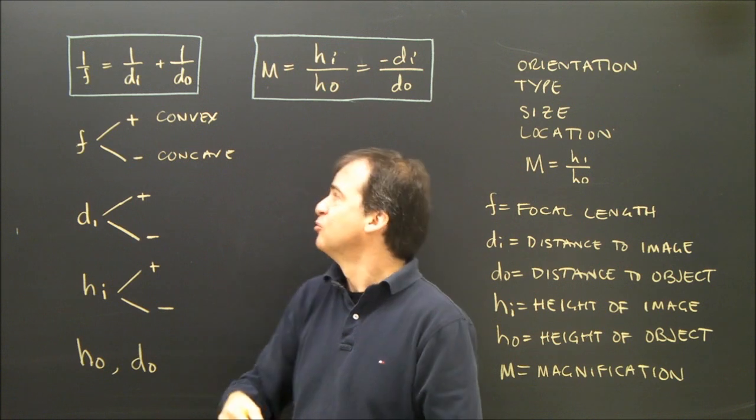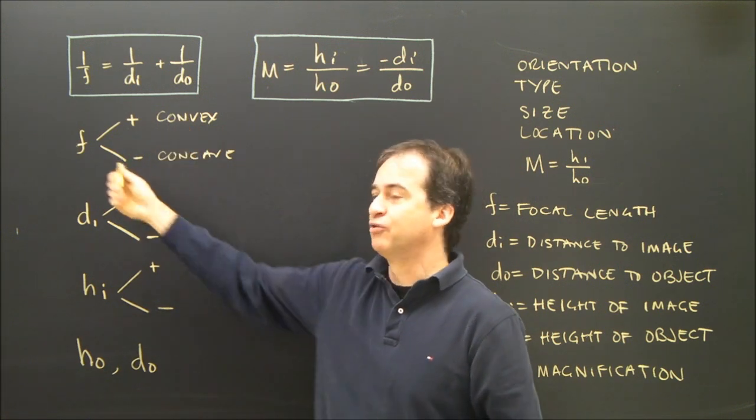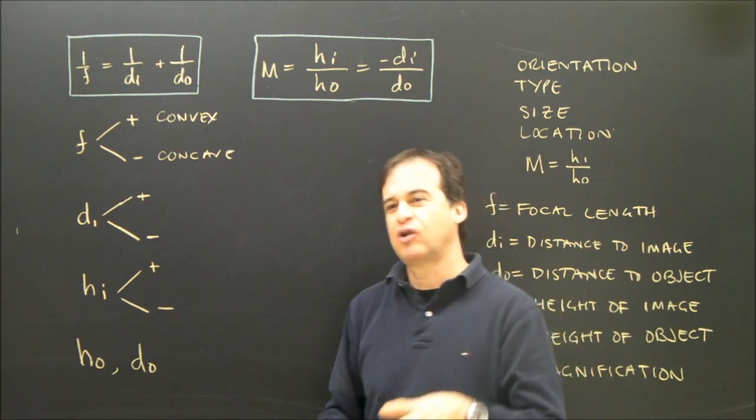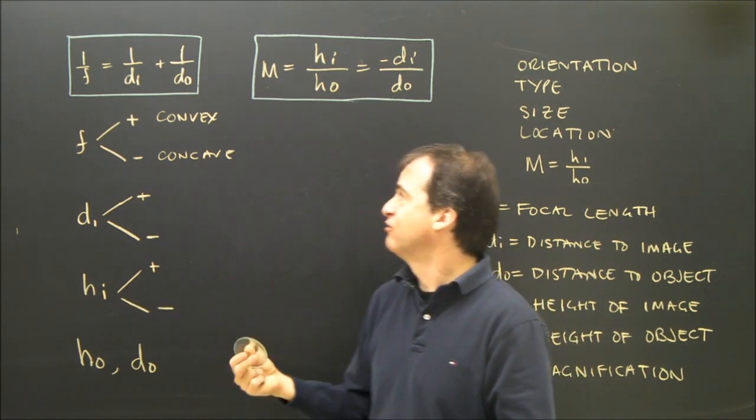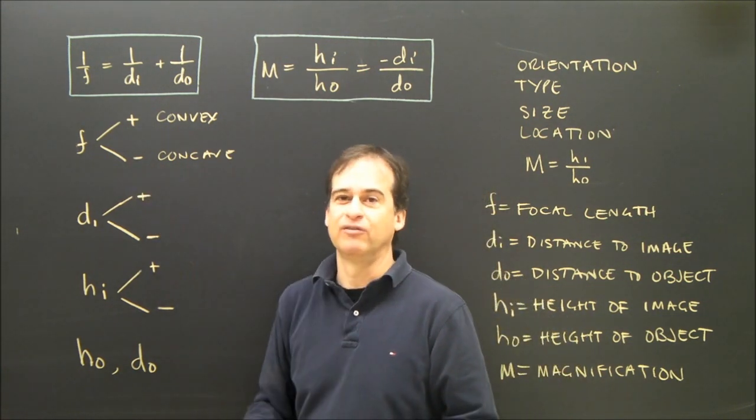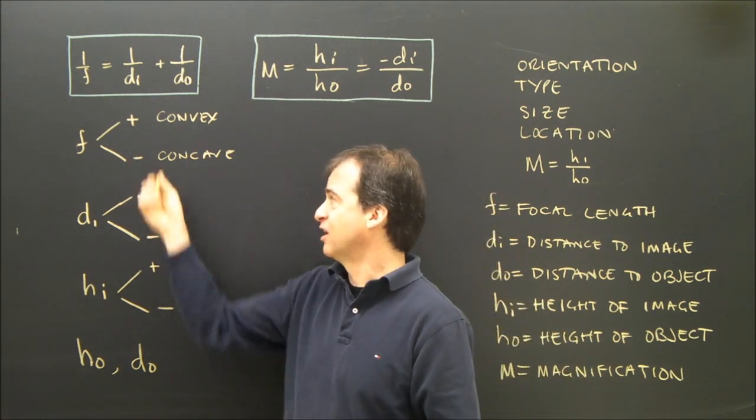So convex lenses, we assign it a positive for the focal length, and concave, we assign it a negative. So if the question says you have a concave lens of 6cm focal length, then you need to put a negative in front of the 6cm, assign it a negative.